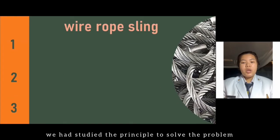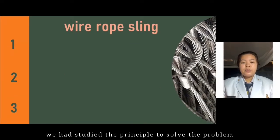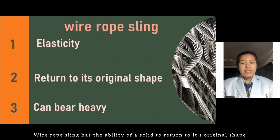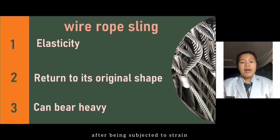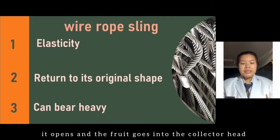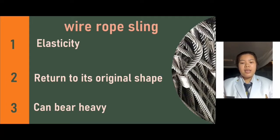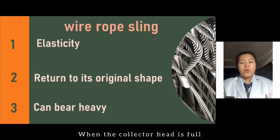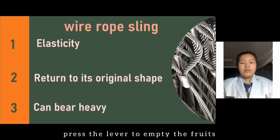From the problem we mentioned, we have studied the principle to solve the problem. The design of a portable loose fruit picker device was based on the principle of elasticity. The wire rope sling has the ability to cause a solid to return to its original shape after being subjected to stress. Therefore, when the wire rope is placed on the loose fruit, making an action force on the wire rope, it opens and the fruit goes into the collector head. After the loose fruit went in, there is no more action force, so the wire rope sling returns to its original shape. When the collector head is full, press the lever to empty the fruit.